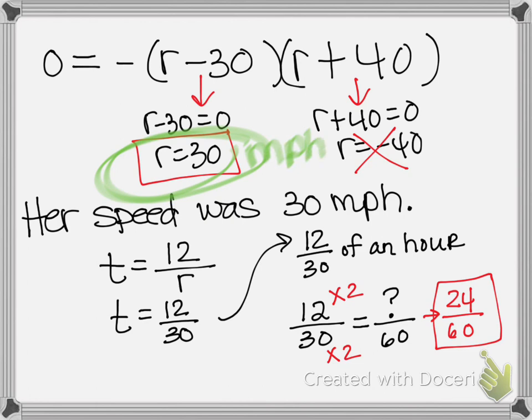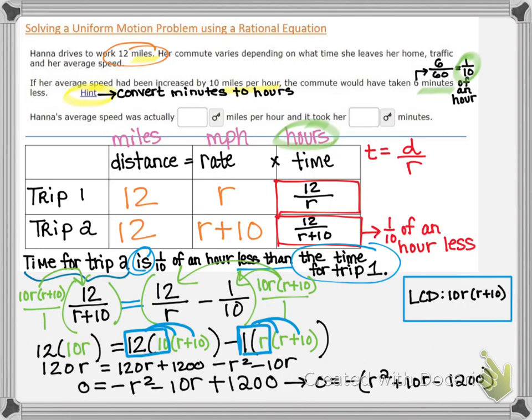So let's just make sure we remember her rate was 30, that was her miles per hour. And now this 24 60ths of an hour, that means it took her 24 minutes. So if we go back to that original slide, we can fill in our answers. So her speed was actually 30 miles per hour. And it took her 24 minutes to get to work, which was 12 miles away.